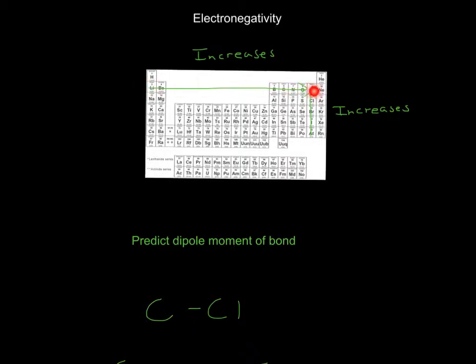Electronegativity increases from left to right until fluorine, and increases up until fluorine.